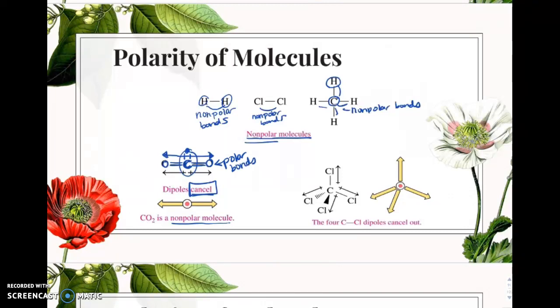Take a look at this one, CCl4. You should know the name of that, carbon tetrachloride. So the carbon-chlorine bond is polar, you see I have a dipole drawn here. It's polar, so I have a polar bond.